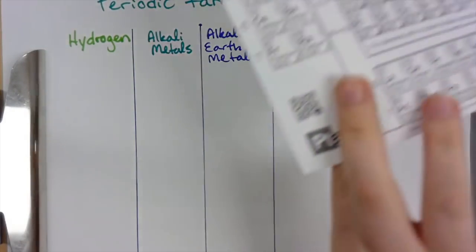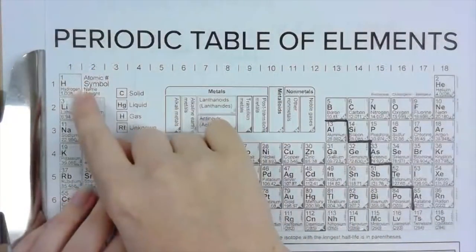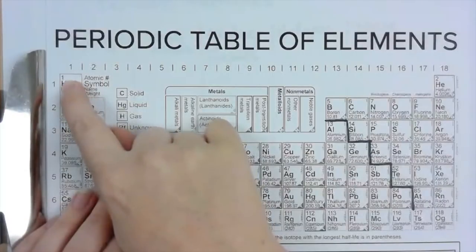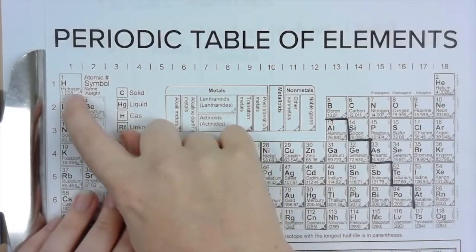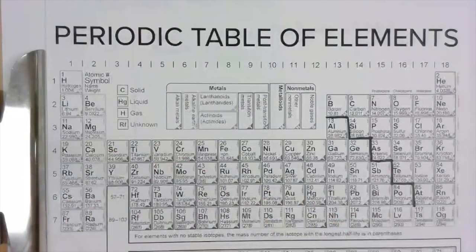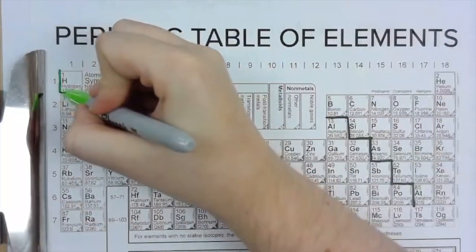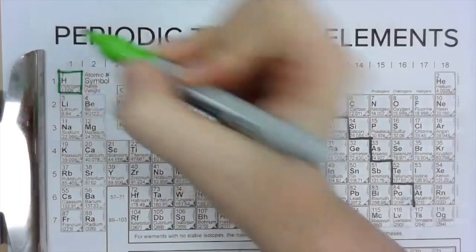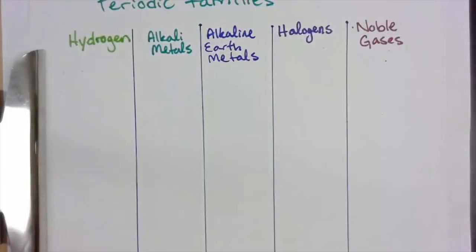So we're going to start with hydrogen. If we look on our periodic table, hydrogen's up here in the top left. Hydrogen has an atomic number of one — that means it has one proton and one electron. It is the lightest element, and what we actually say is that hydrogen is in its own group. So I'm going to outline hydrogen — hydrogen is its own group.